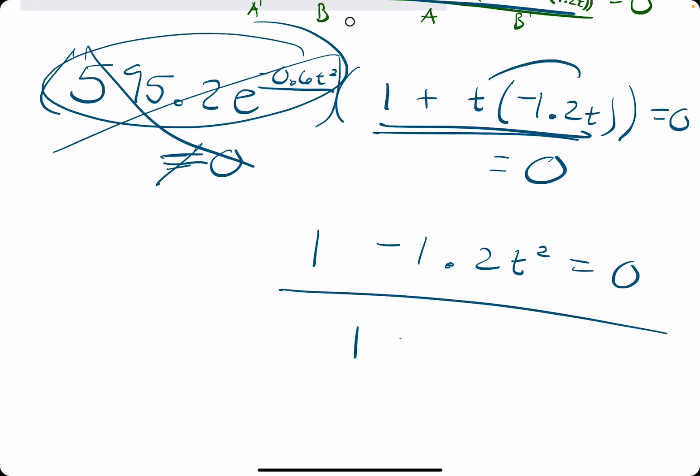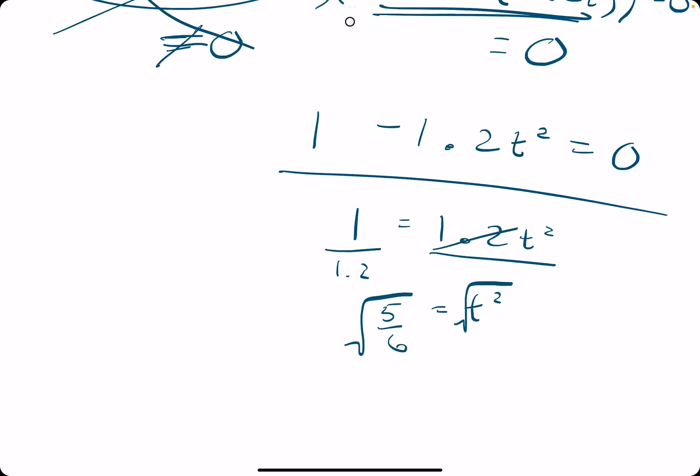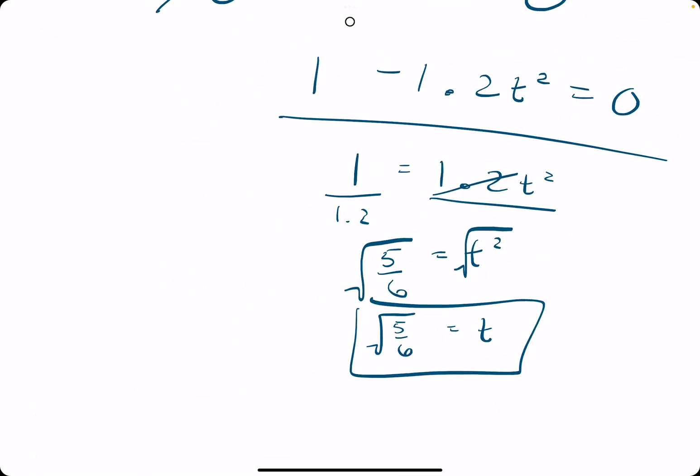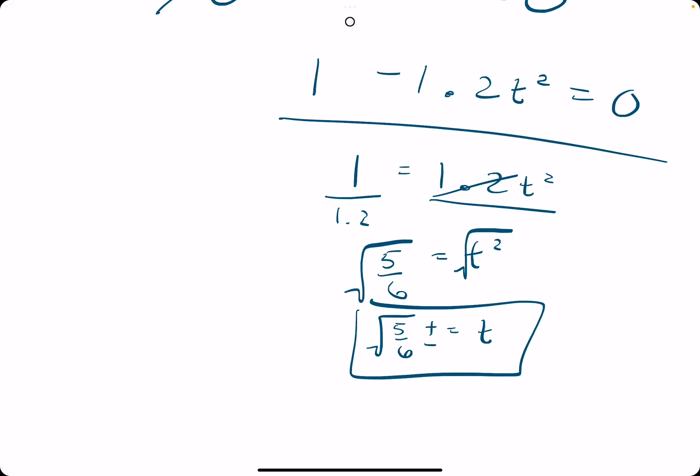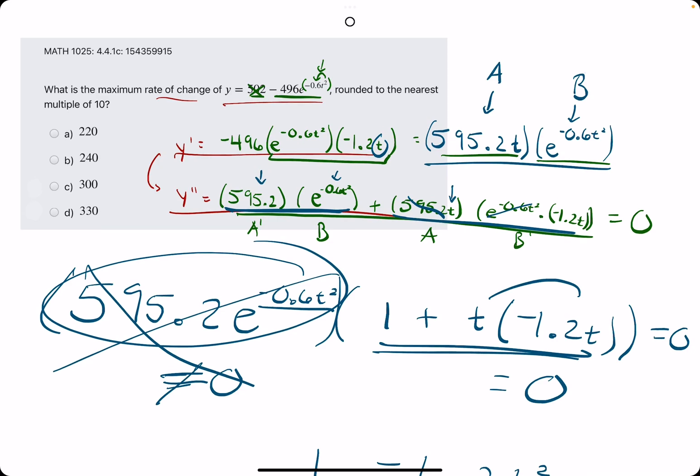And once we solve for t here, I think we're done. We might have to actually do one more thing. We'll talk about it. But, so let's solve for t. I'm going to add the 1.2t squared to the other side, divide by 1.2, and then we'll have t squared equals, I think this is 5 sixths as a fraction, and then we take the square root of both sides. So, we get t is plus or minus square root of 5 sixths. We could probably, most likely, just take the positive t value for this, if I had to guess. I'm going to just hope for the best on that.